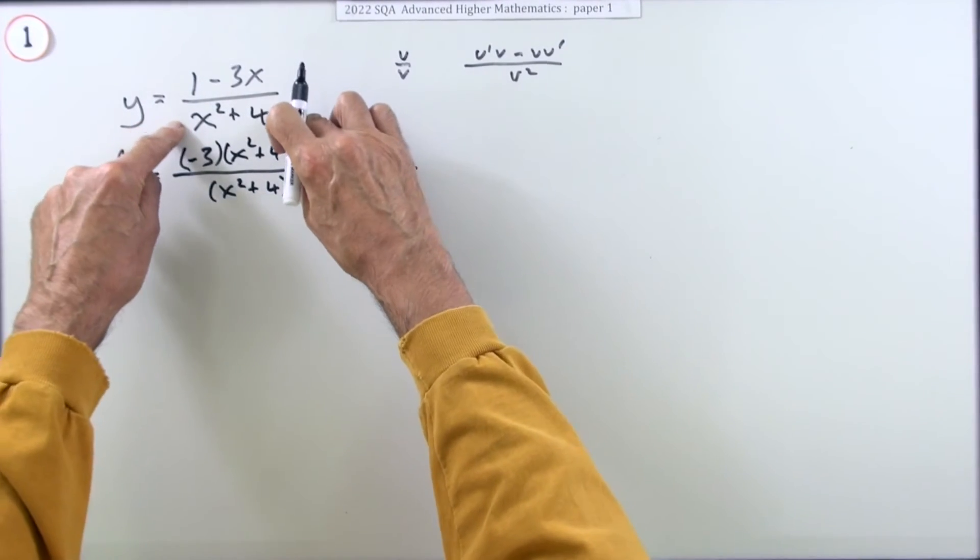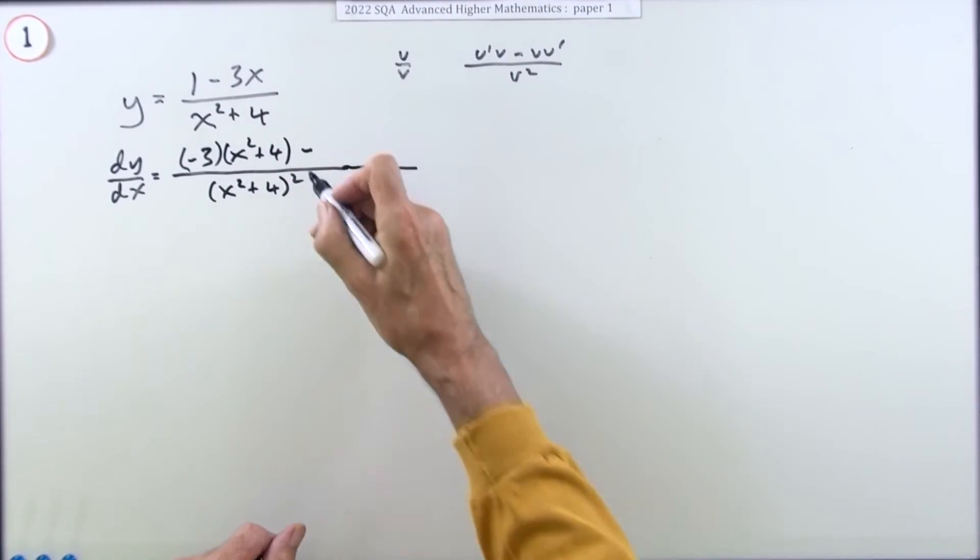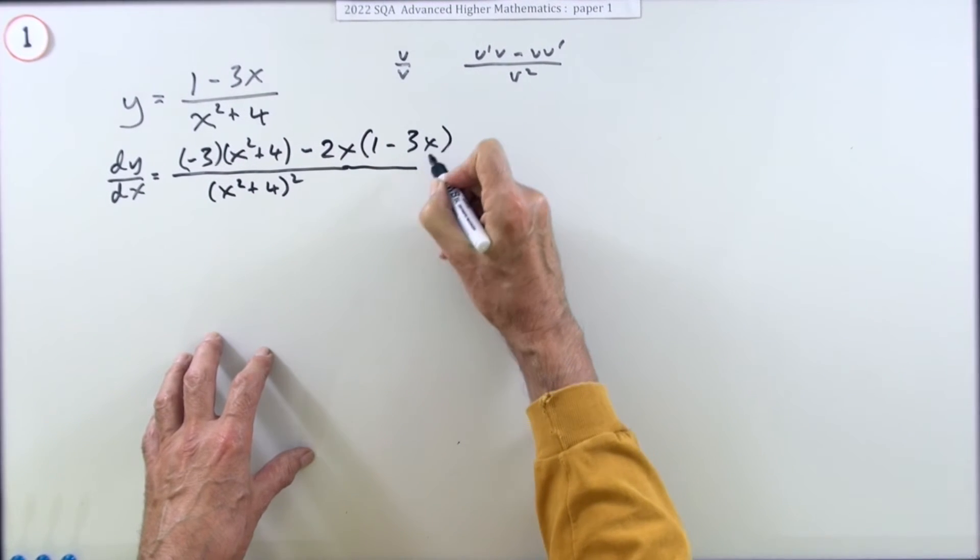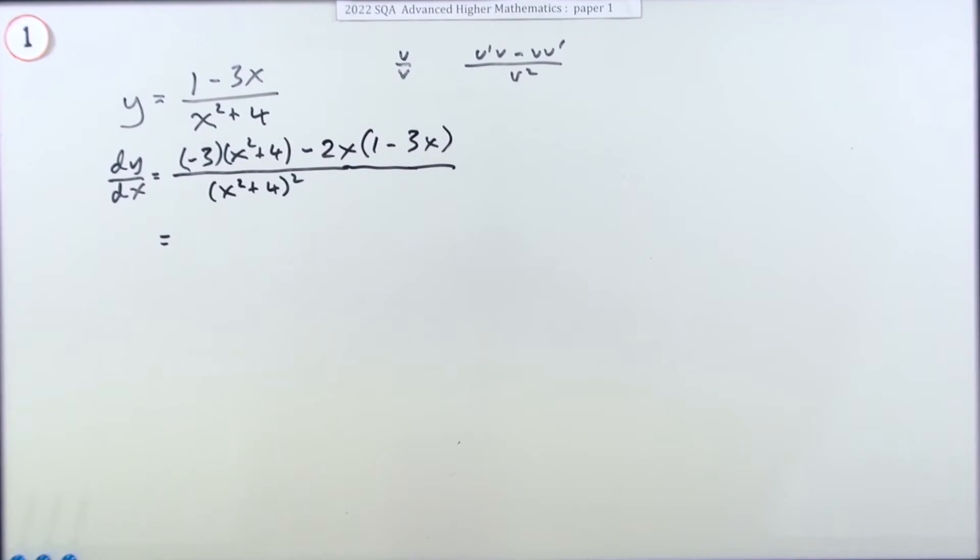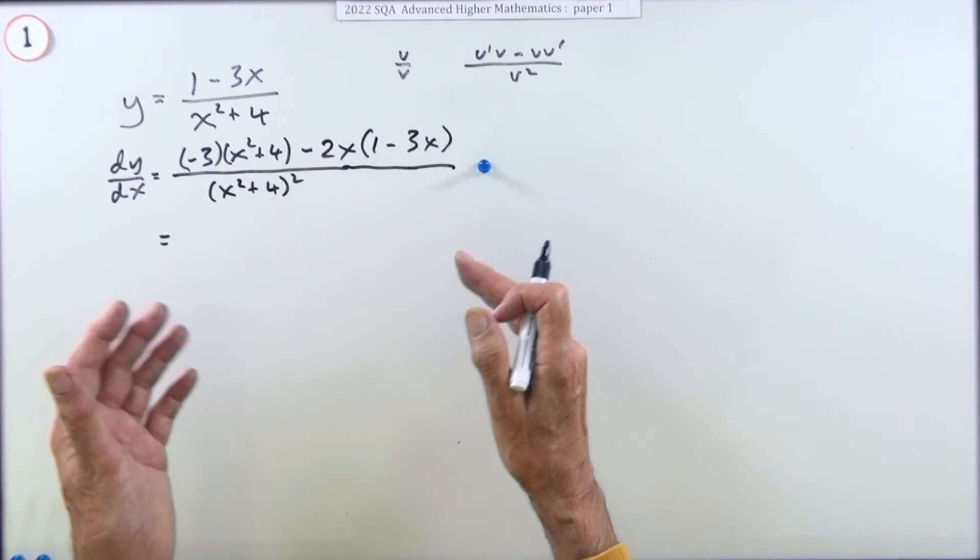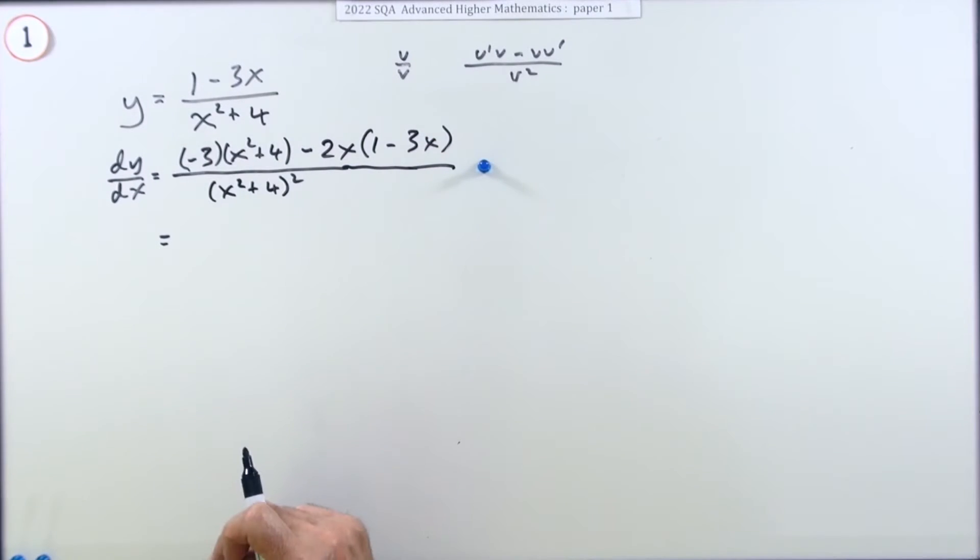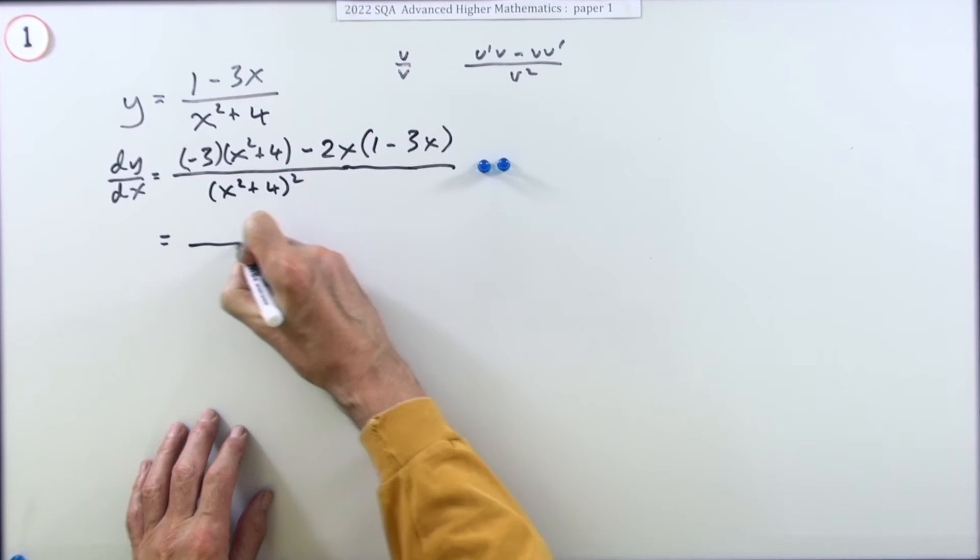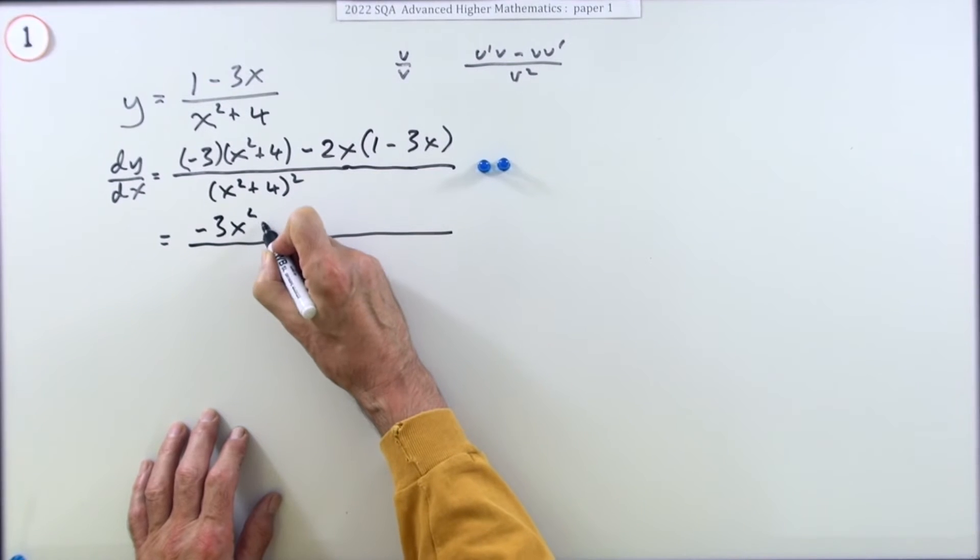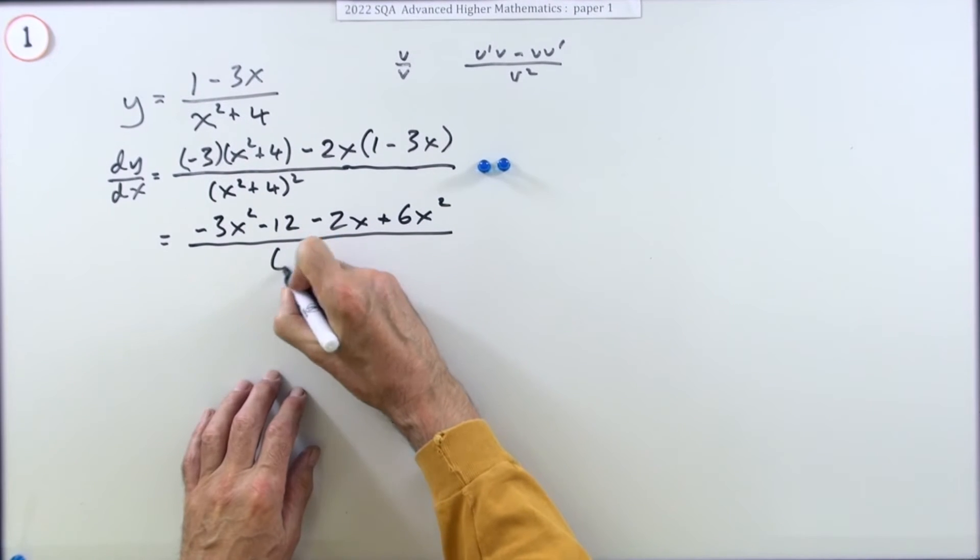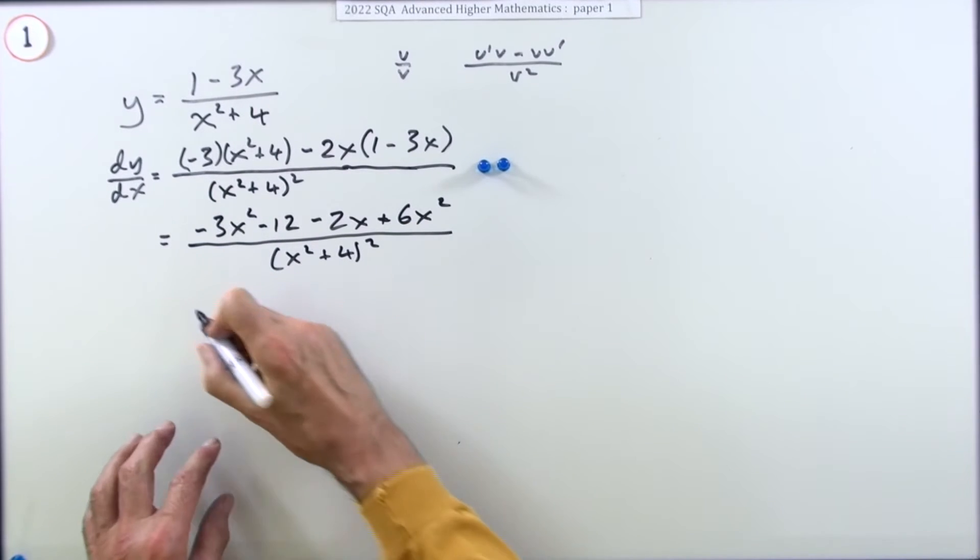Now having done that, the first two marks are essentially for knowing the pattern for the quotient rule and doing the differentiations properly. The next mark is for tidying that lot up. So we've got negative 3x squared minus 12 minus 2x plus 6x squared all over x squared plus 4 squared.